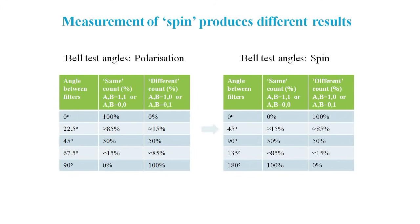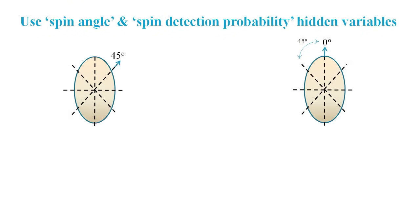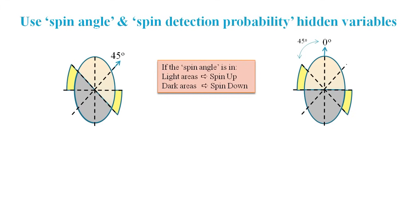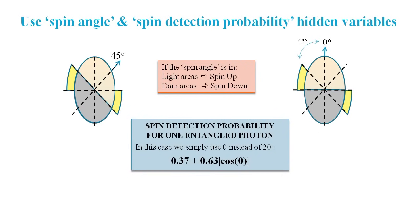For example, consider the case where there's 45 degrees between the filter alignments. We use a different arrangement of the light and dark areas when working with spin. We simply have light and dark semicircles. These highlighted sectors are the ones that lead to different results. And again, they form one quarter of the whole area. We will use two new hidden variables, spin angle and spin detection. And we simply use theta instead of 2 theta in the probability distribution expression.